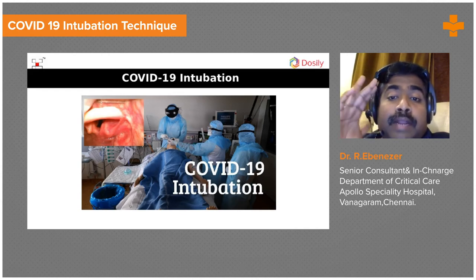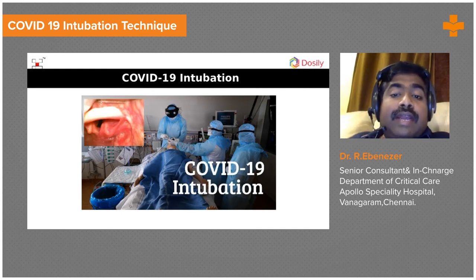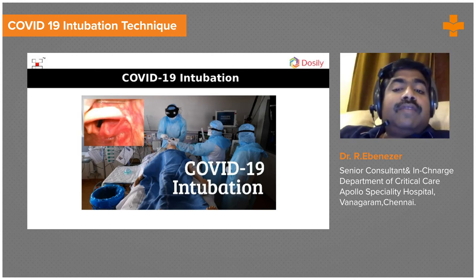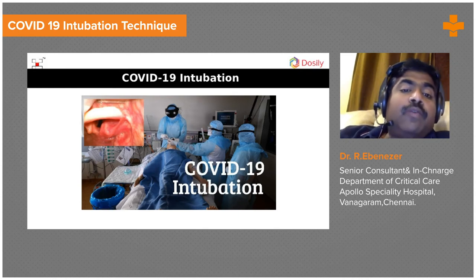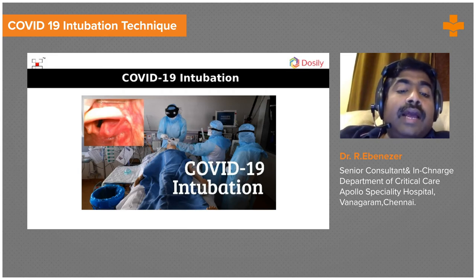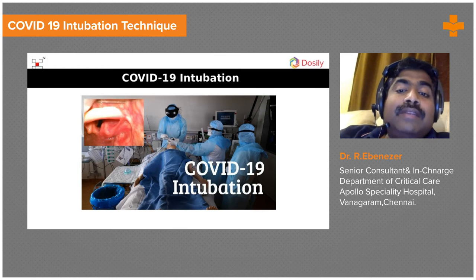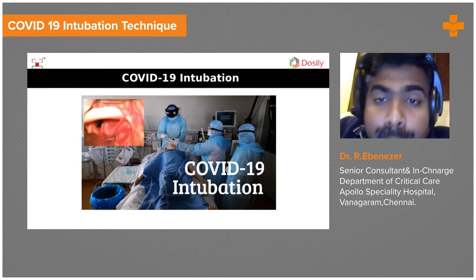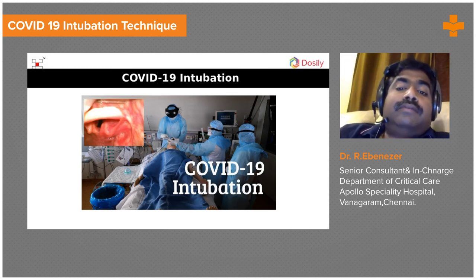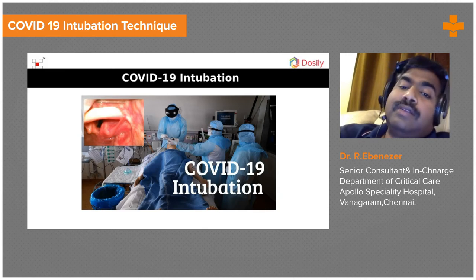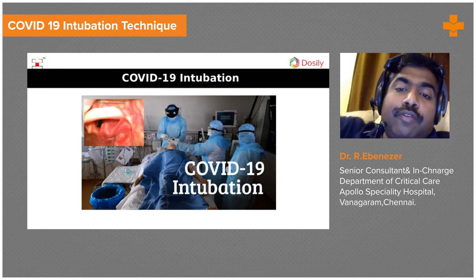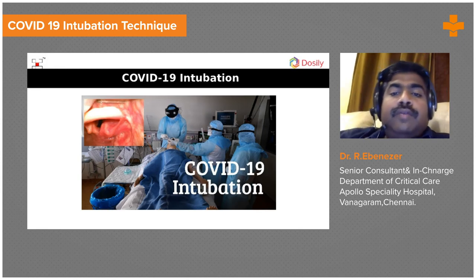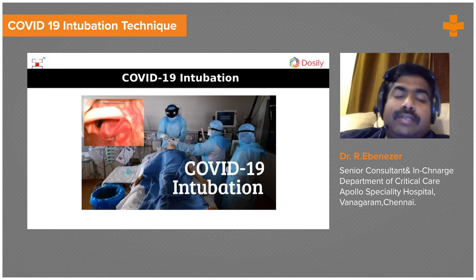The main intubator is completely in PPE, the assisting person is in PPE, and another team member is in PPE to help the staff nurse — who is also in PPE, wearing a helmet visor, N95 mask, and goggles. This level of preparation is needed. Using a video laryngoscope with a separate screen means you do not need to bend down close to the patient's mouth; you can look at the screen from a distance and slowly introduce the tube, increasing the distance between the patient's mouth and your face.